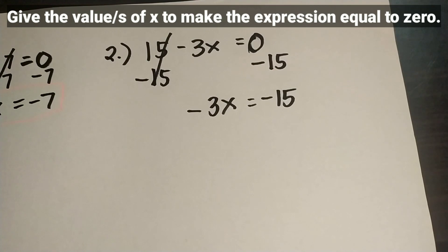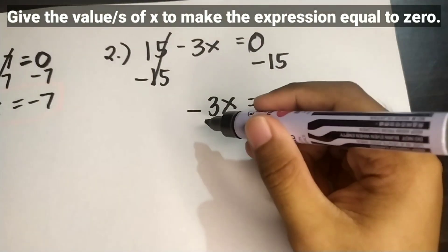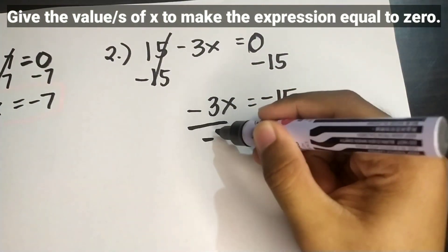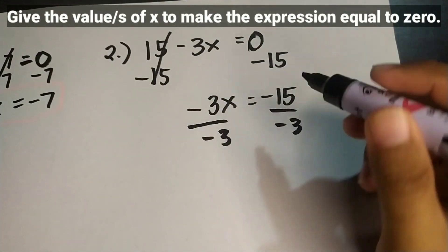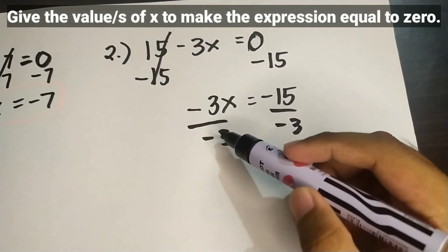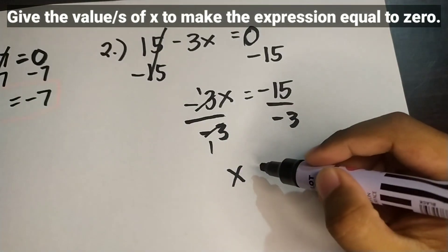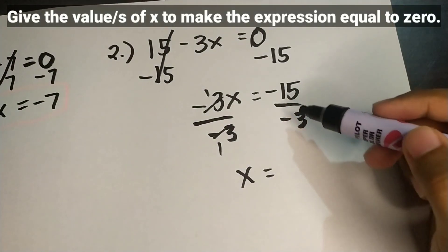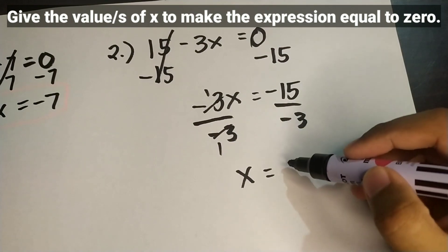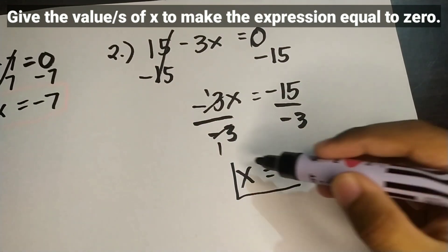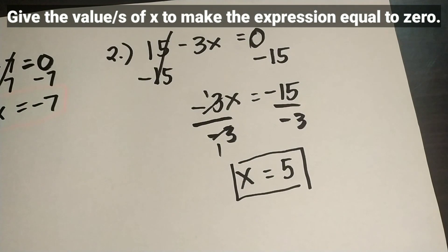We still have negative 3 as the numerical coefficient of the variable. To eliminate negative 3 so that only x remains on the left side, we divide both sides by negative 3. So negative 3 divided by negative 3 equals 1, meaning x is equal to negative 15 divided by negative 3, which is equal to positive 5. So our answer is x is equal to positive 5.